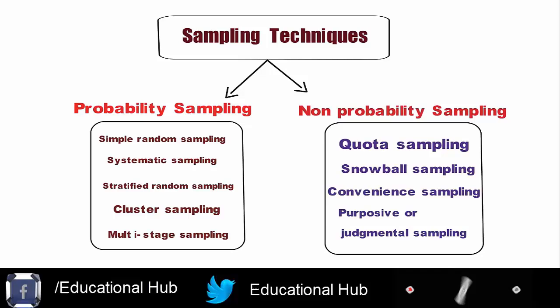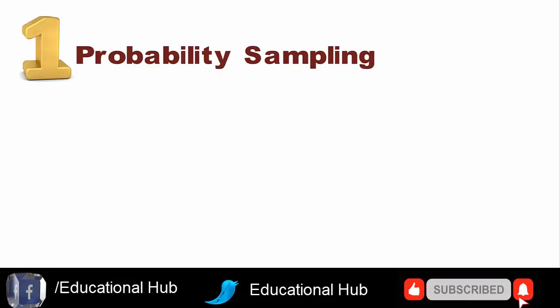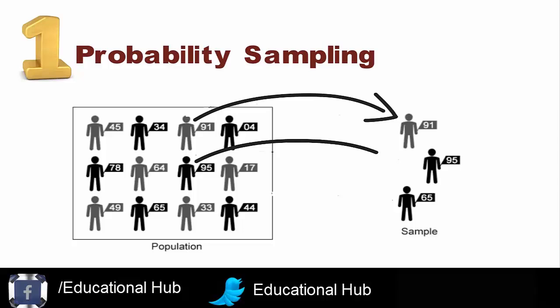Before choosing a specific type of sampling technique, it is needed to decide on a broad sampling technique. I will show the various types of sampling techniques. 1. Probability sampling. Probability or random sampling has the greatest freedom from bias, but may represent the most costly sample in terms of time and energy for a given level of sampling error.